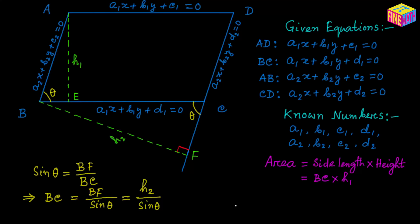So we have found the value of BC in terms of H₂ and sine of theta. We still have to calculate the values of H₂ and sine of theta. For the area, we can write it as H₂ over sine of theta multiplied by H₁, which equals H₁ times H₂ over sine of theta. To calculate the area we have to figure out H₁, H₂, and sine of theta.